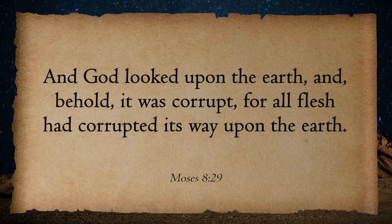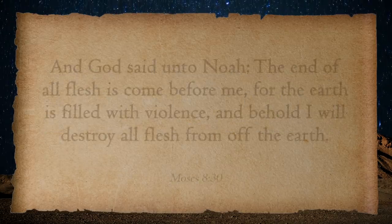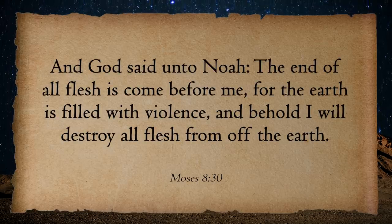Verse 29: 'Behold, it was corrupt, for all flesh had corrupted its way upon the earth. And God said unto Noah, The end of all flesh has come before me, for the earth is filled with violence, and behold, I will destroy all flesh from off the earth.' Some have wondered why God would be so cruel — why would he destroy them? Is it possible that it would not really be merciful for God to continue to send spirit children down to the earth to be born into that setting where they really don't have a chance to discover the gospel and stay on the covenant path?